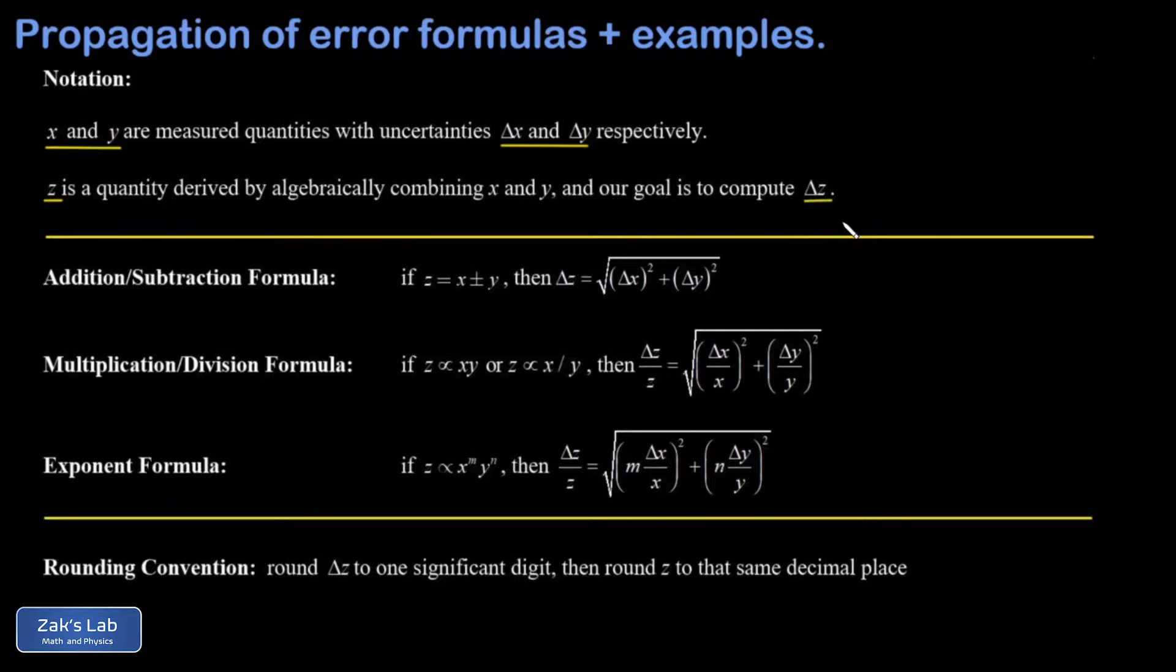There are three different cases we're going to look at. The addition and subtraction case: if z is a sum or difference of x and y, then the uncertainty in z is given by something that looks a lot like the Pythagorean theorem. You take the square root of the sum of the squares of the uncertainties in those individual measured variables.